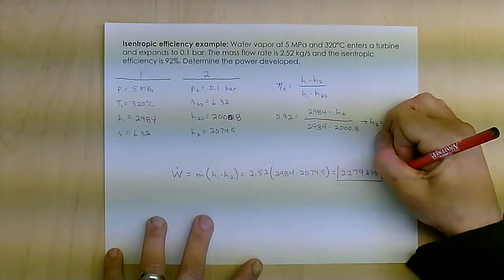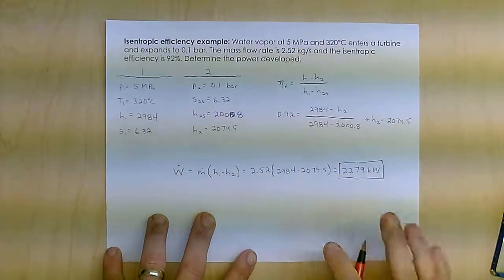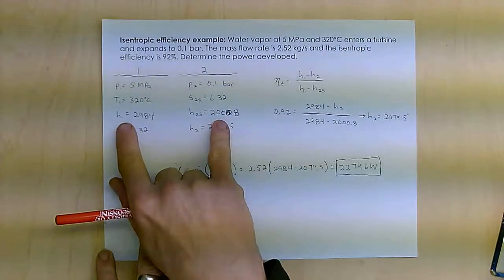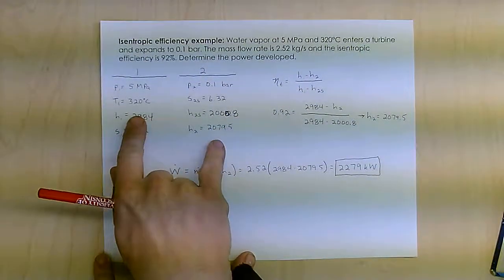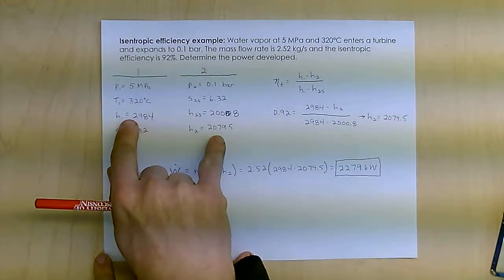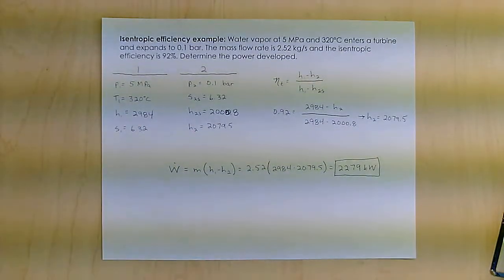So if you have these isentropic efficiencies, what you do is you figure out the best-case scenario and then use that efficiency to find the actual situation that you're dealing with in this problem.